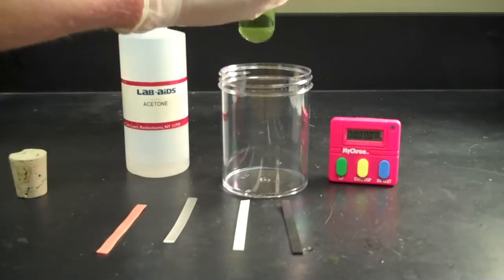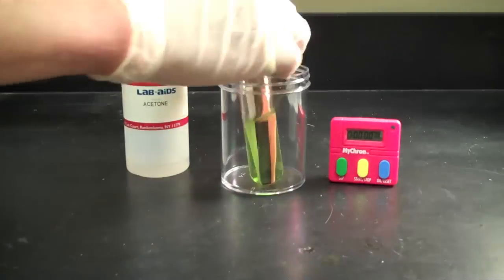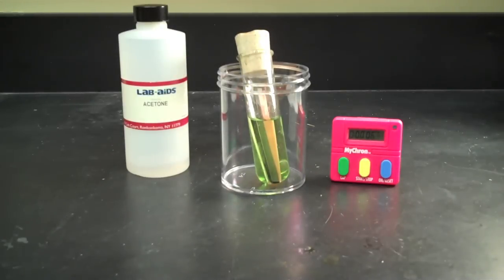Again, we'll speed up the process where we place each strip of plastic in the acetone and let it soak for five minutes.